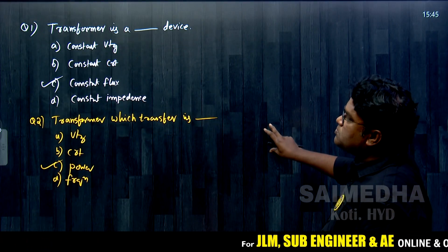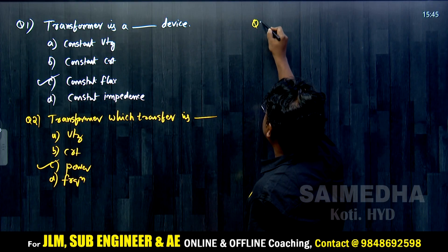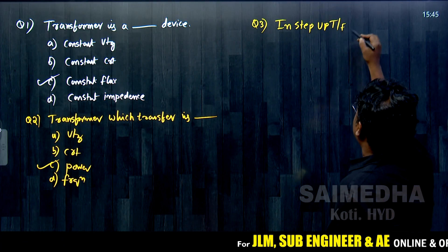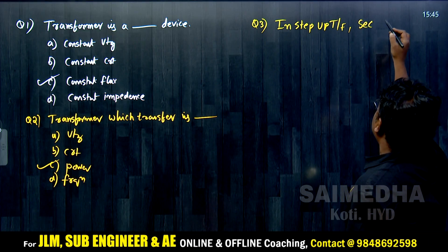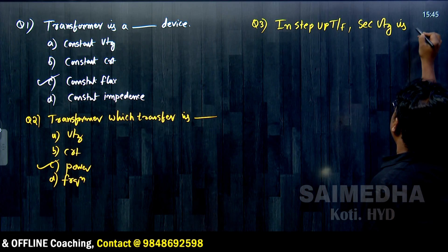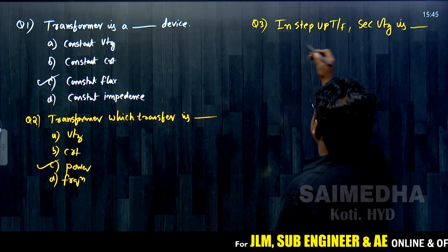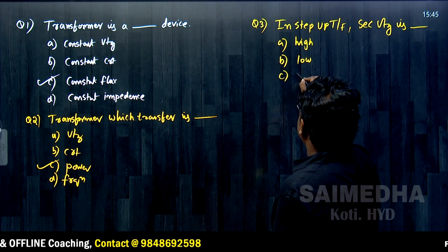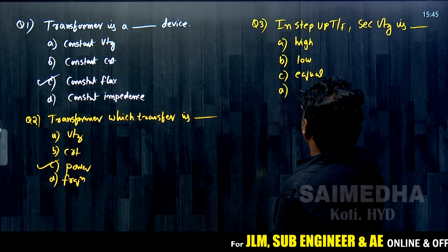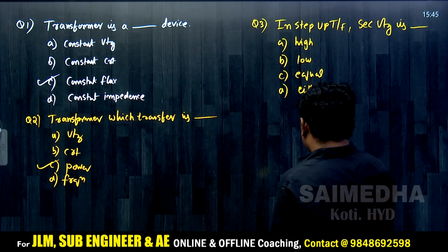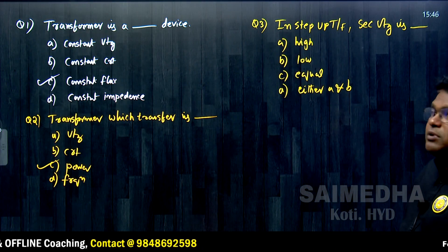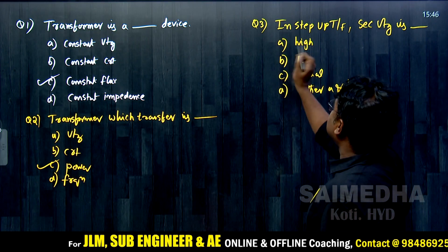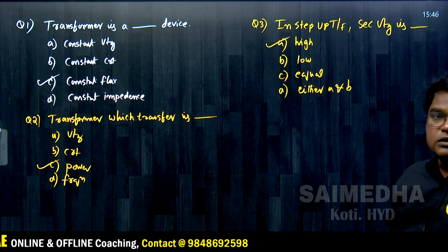Question 3: In a step-up transformer, the secondary voltage is dash. Options: (a) high, (b) low, (c) equal, (d) either a or b. A step-up transformer increases voltage from the primary to the secondary winding, so the secondary voltage is high. Option A is correct.